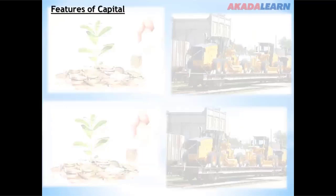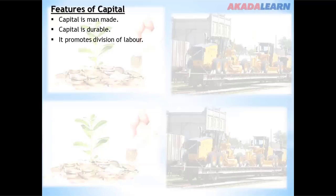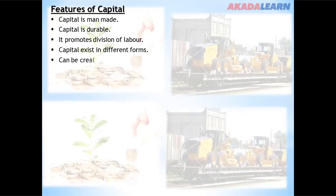Features or characteristics of capital: capital is man-made and durable; it promotes division of labor; it exists in different forms — for example, cash or assets. Land can also be considered as capital because it can be used as collateral. Capital can be created by an excess of production over consumption.